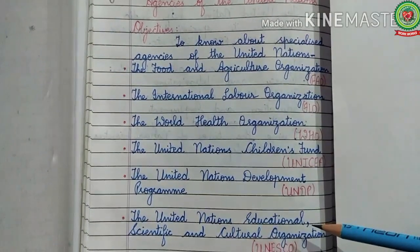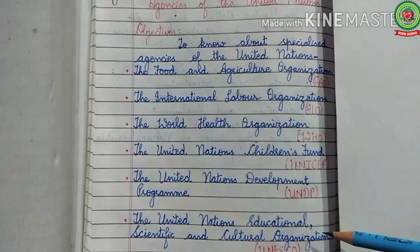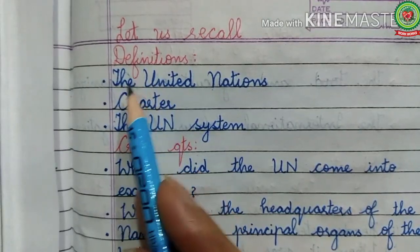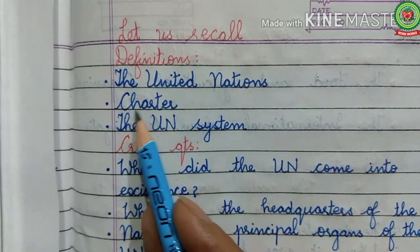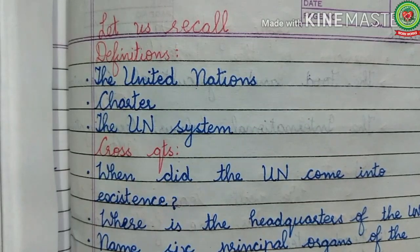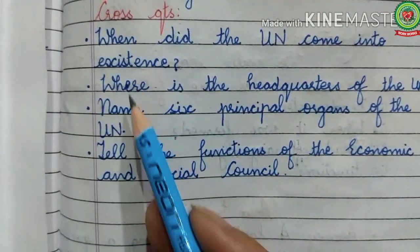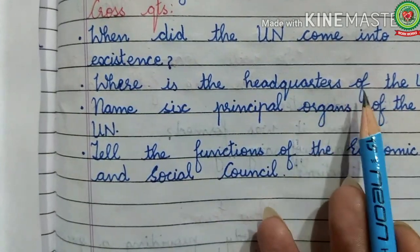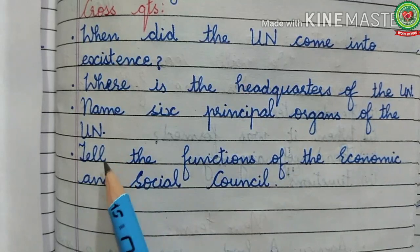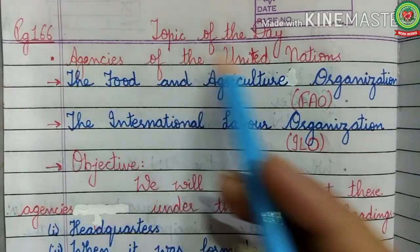The last agency is the United Nations Educational, Scientific and Cultural Organization, that is UNESCO. Before discussing these agencies, let us recall the definitions and cross-question answers related to the organs of the United Nations. The UN Charter, the UN system — answer these cross questions: when did the UN come into existence? Where is the headquarters of the UN? Name the six principal organs of the UN.